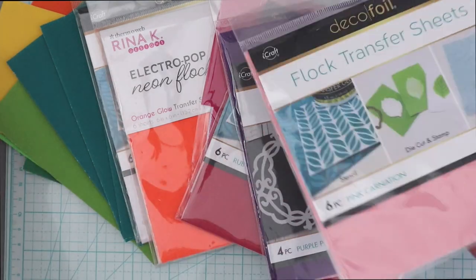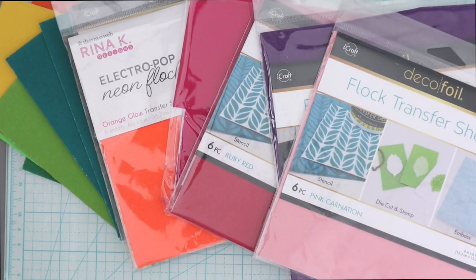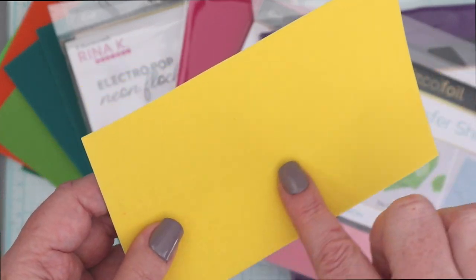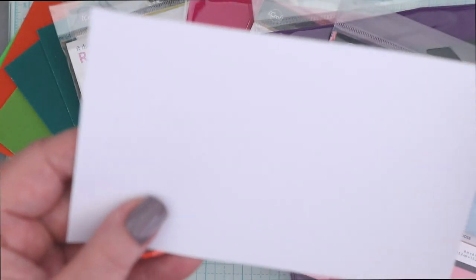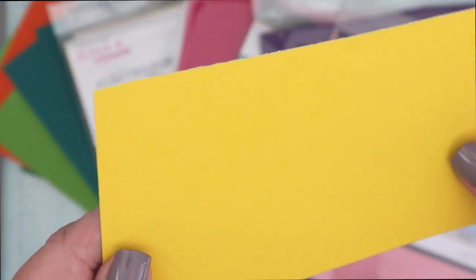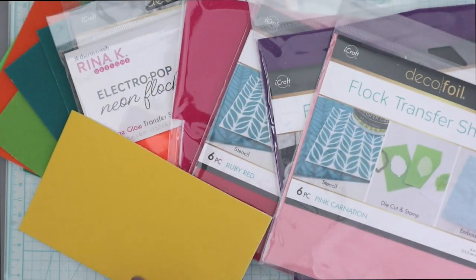So here are some of the ThermaWeb's iCraft Ecofoil Flock Transfer Sheets that are available. They have an entire rainbow of colors from brights to pastels to even neons. They have this nice thin paper on the back, it makes it flexible and easy to die-cut, and the front is pure Flock Texture goodness.